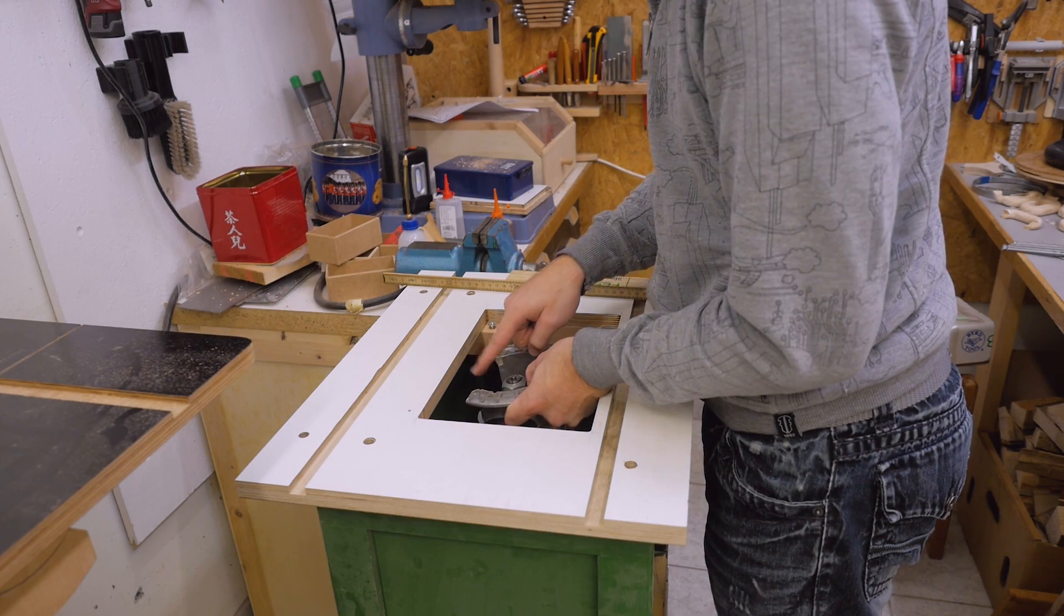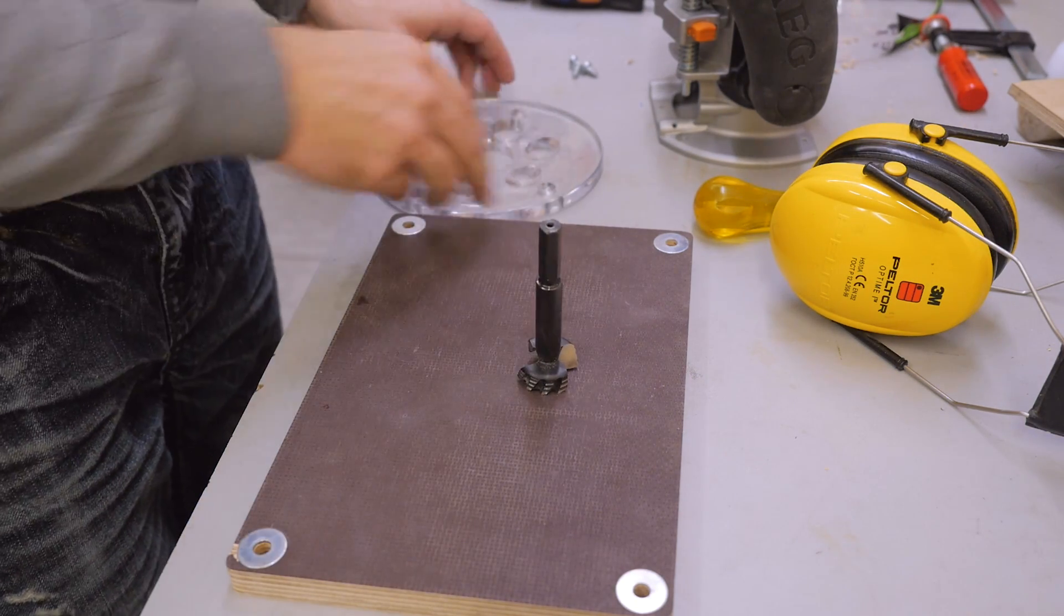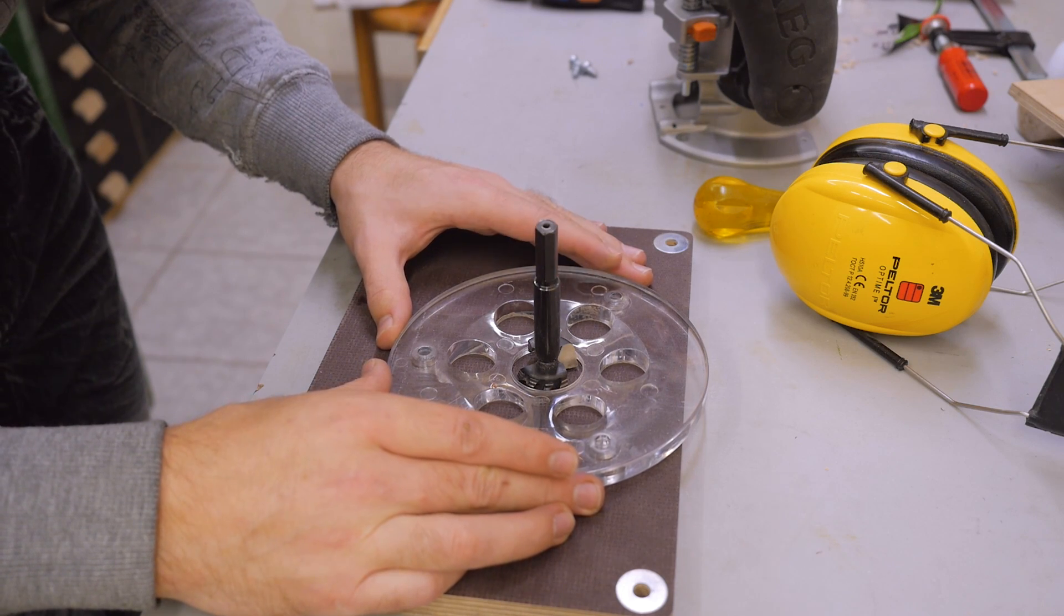I can put a forstner bit where I want the center to be and that will help me to align this base plate.